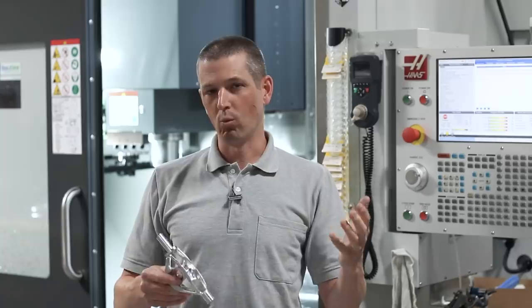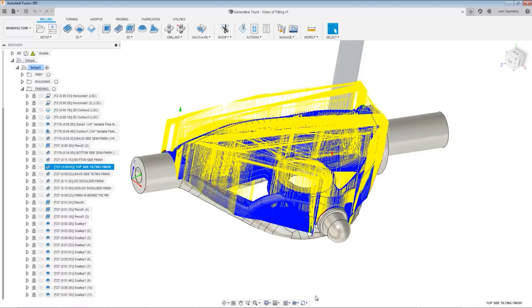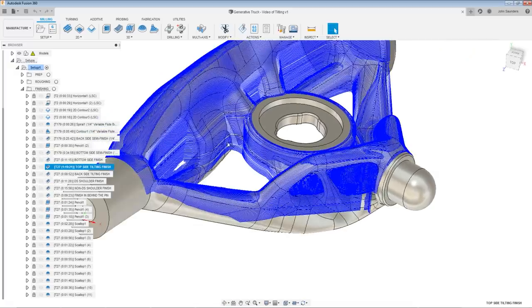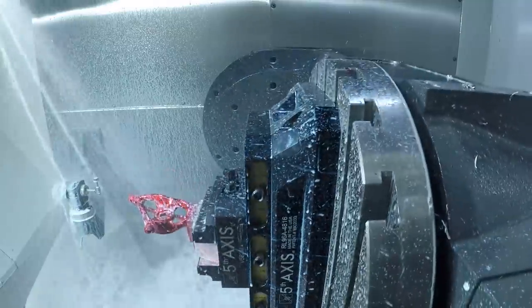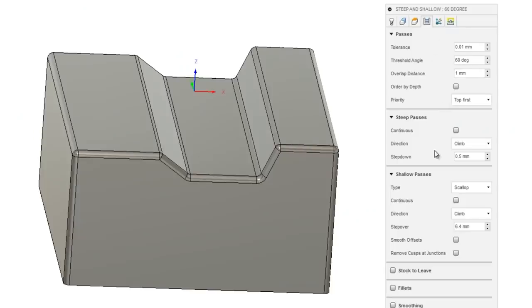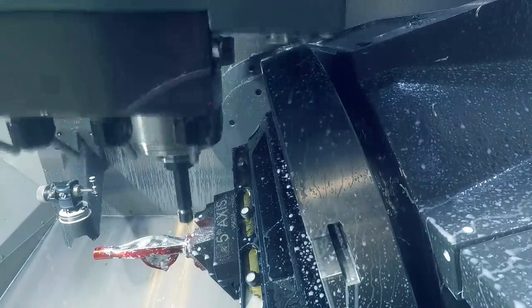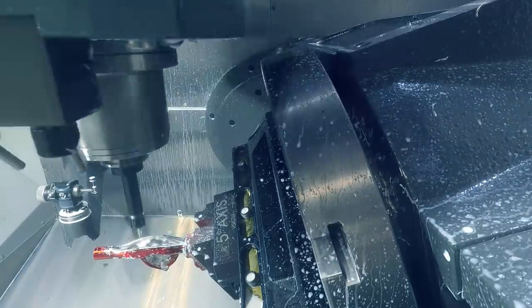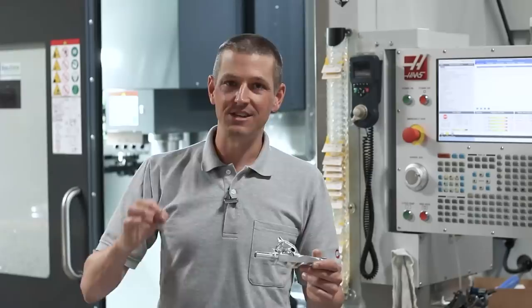Where it really helped us here was it's a toolpath that can handle really steep walls, which previously was something that you would often use 3D contour for, as well as relatively shallow or flatter surfaces, which previously you would use something like Parallel or Scallop for. Steep and Shallow can merge both of those toolpaths into one toolpath, which is going to give us better surfacing and blending control with the absolute amazing added bonus of five-axis capability.